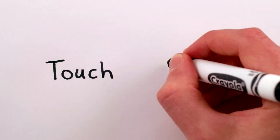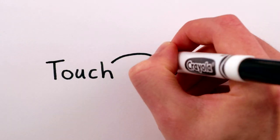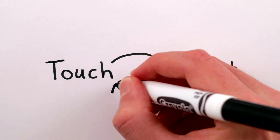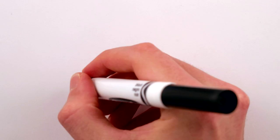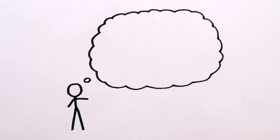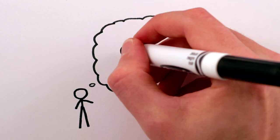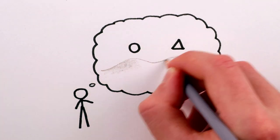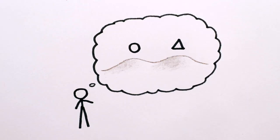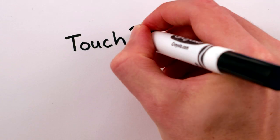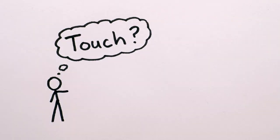If you look at a dictionary, touch is usually defined as physical contact, while contact is defined as touching physically — not much help. But most people have this intuitive idea that touch is something like two solid objects so close together there's no space between them. The trouble is, this doesn't have anything to do with overlapping waves, which, as we know, are how electrons actually behave.